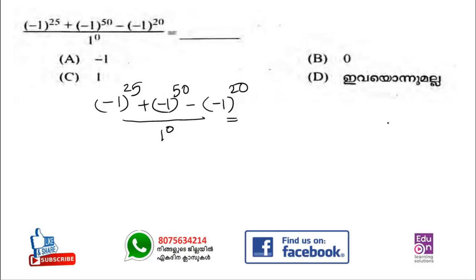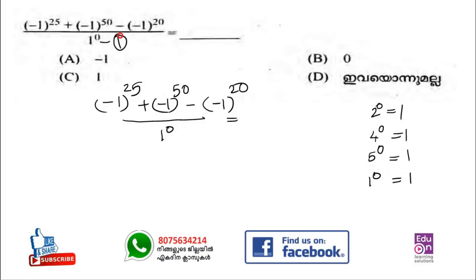Any value raised to zero is 1. So 5 raised to 0 is 1. That's why we have zero power at the top — that's why we have 1 raised to 0. 1 raised to 0 is 1. The answer is 1. This is minus 1. That's the two things. Plus 1 raised to 0.